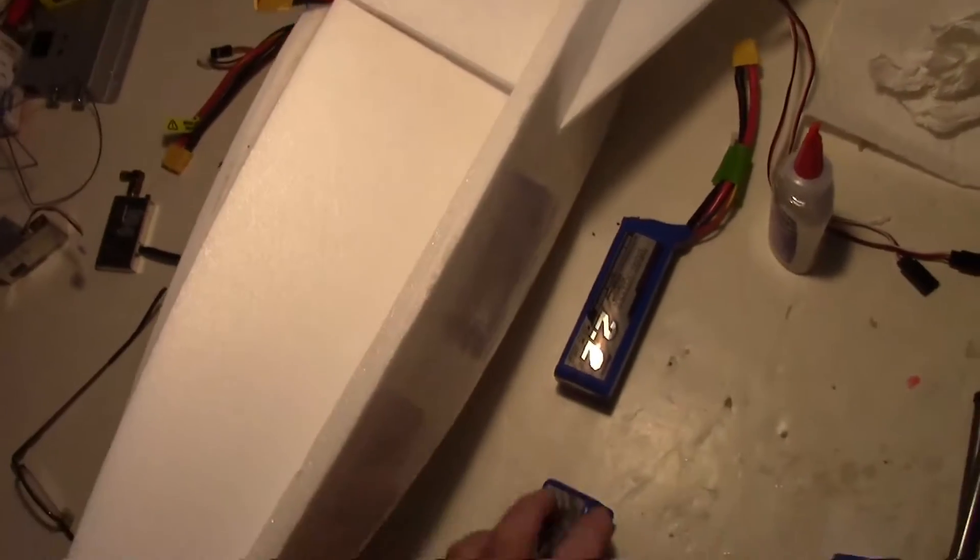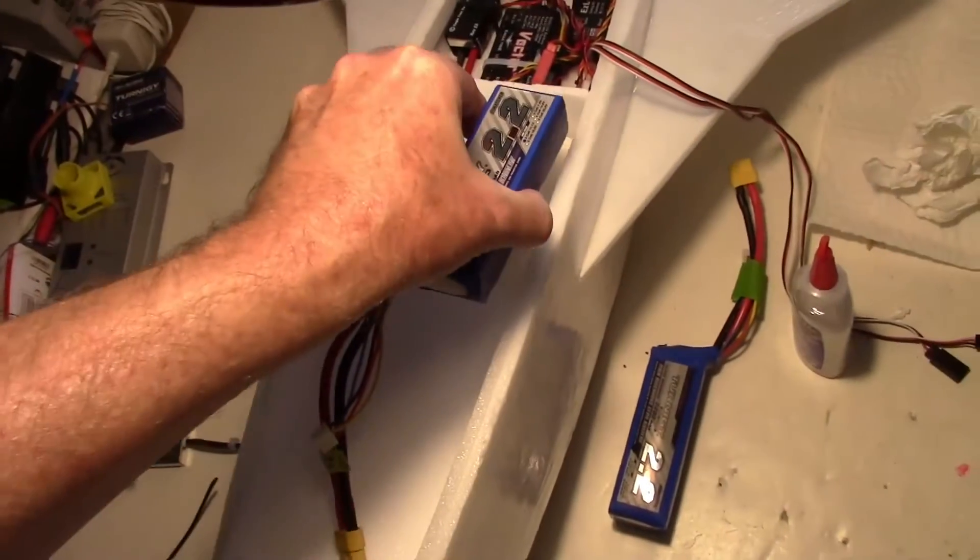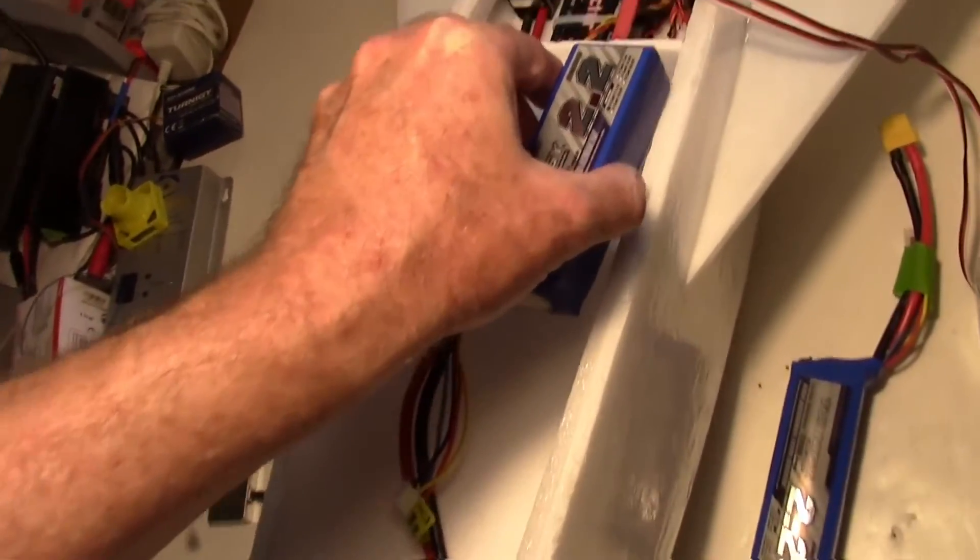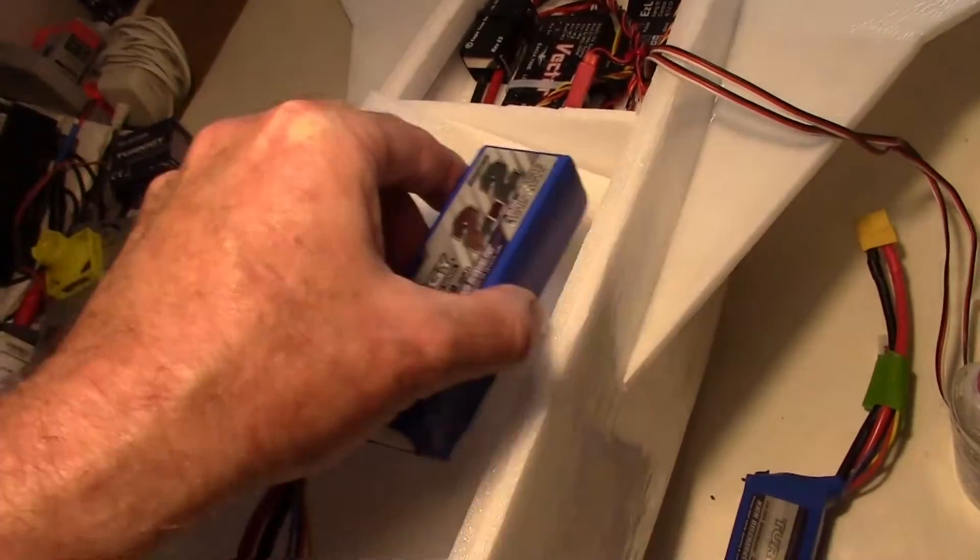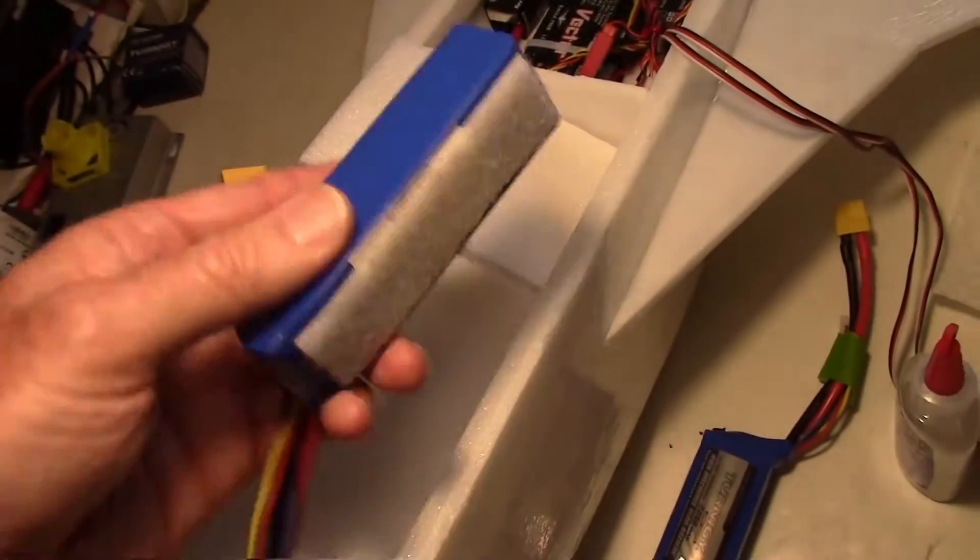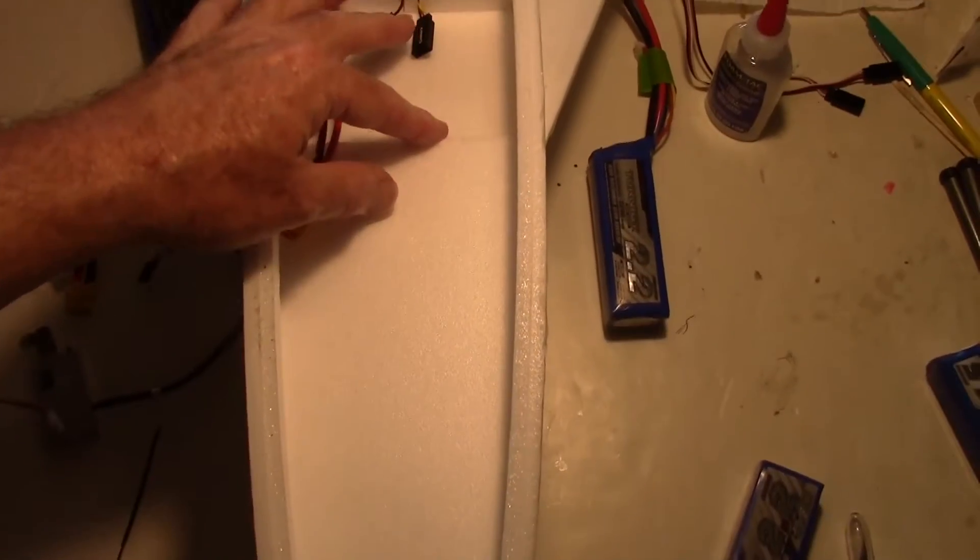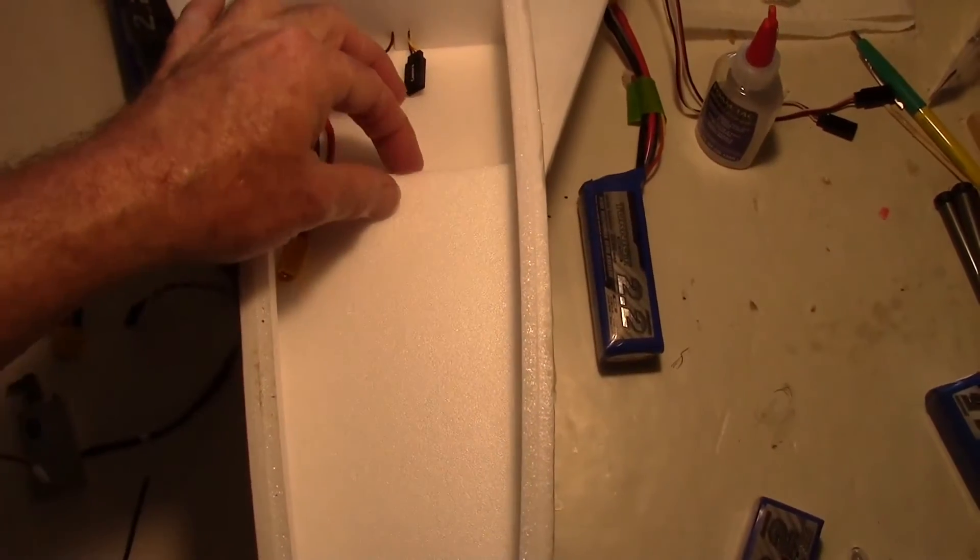Right there, so the batteries will end up right about there, and right in front of that firewall. Two batteries. I'm going to try to use two 2200s. So that's about where it should go, right on the edge of this, just overlapping a little bit up to the front right there.